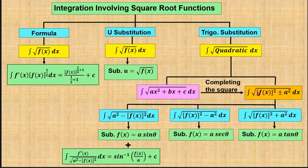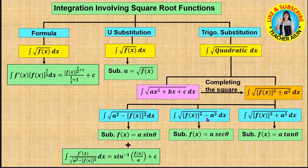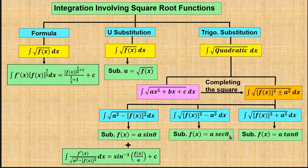Once we have converted the quadratic into standard form, there are three possible options. If the quadratic is in the form f(x)² + a², use the substitution f(x) = a tan θ. If the quadratic is in the form f(x)² − a², use f(x) = a sec θ. If the quadratic is in the form a² − f(x)², use f(x) = a sin θ. For this last form, we can also use the integration formula that produces an inverse sine.